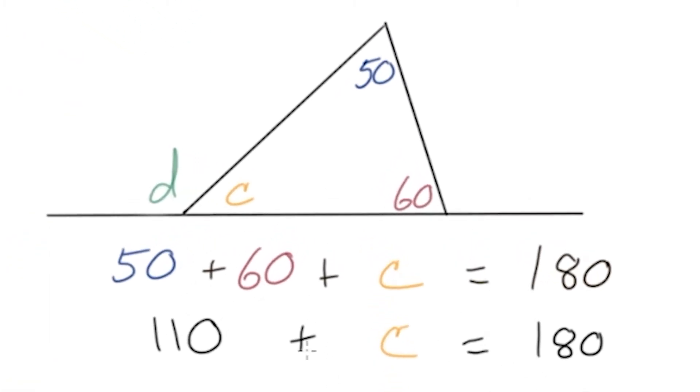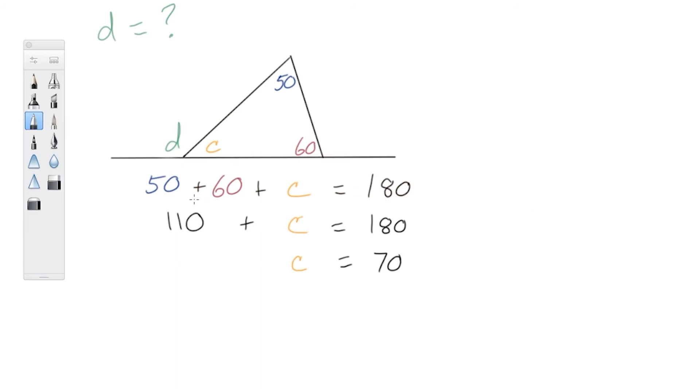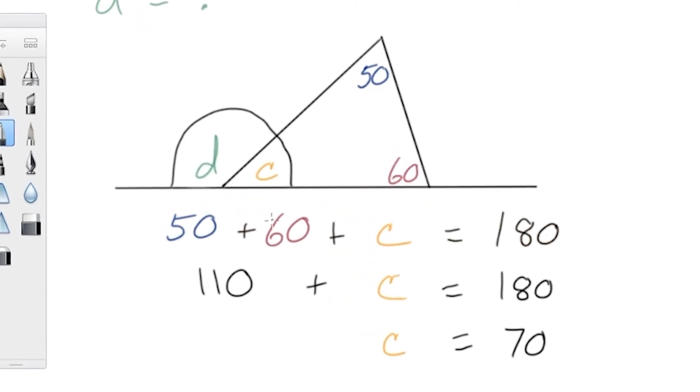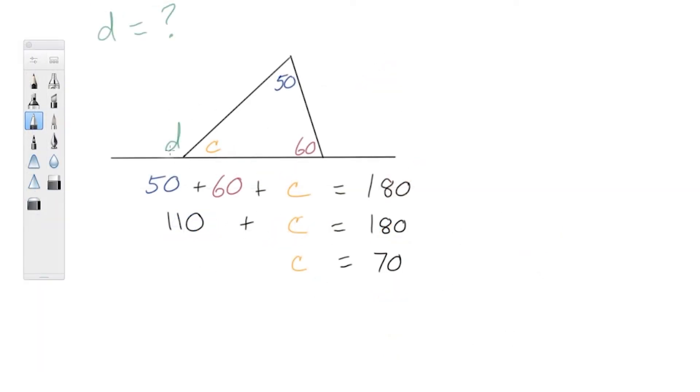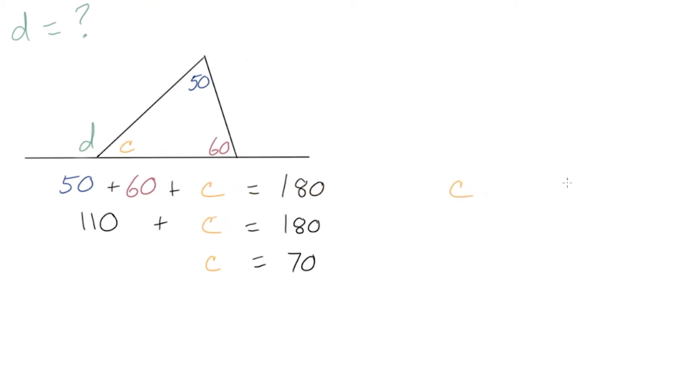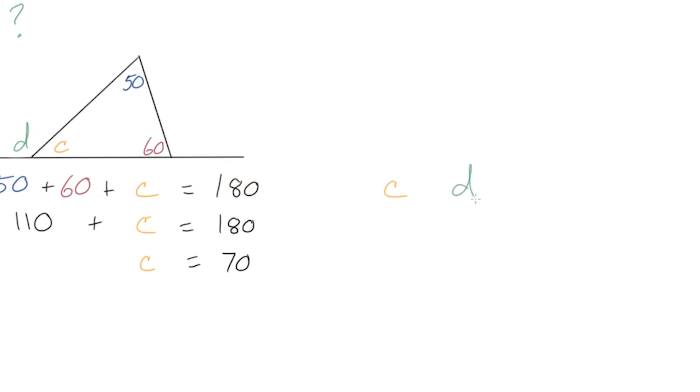Then from here, how can we get the angle of measure D? Well, one thing we can notice is that C and D, these angles are adjacent, they're next to each other, and also they form a straight line. So what that means is that angles C and D are supplementary, which means that when we add them together, these will equal a straight line, 180 degrees. And sometimes these are called linear pair.